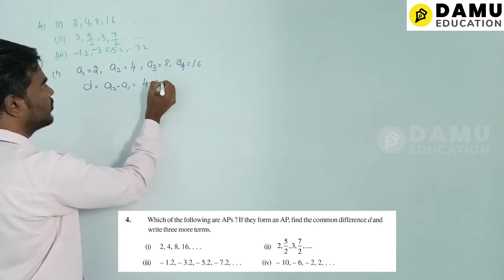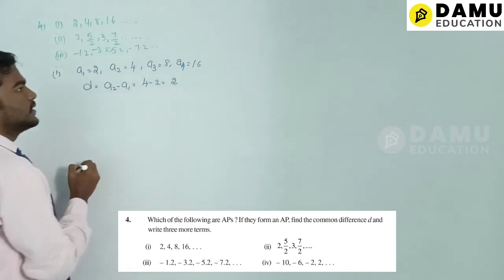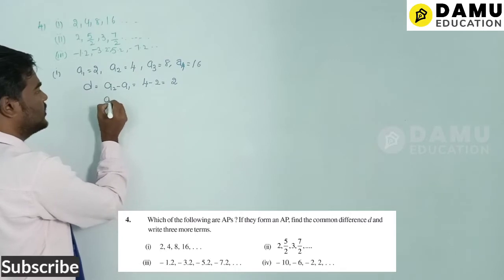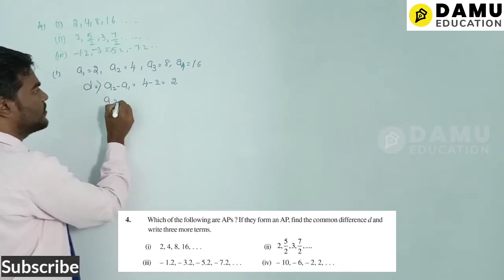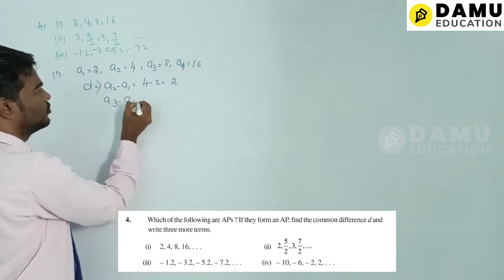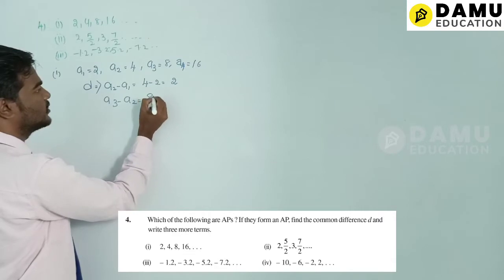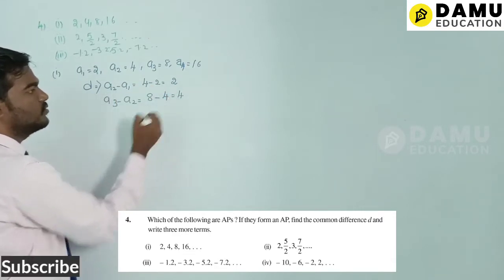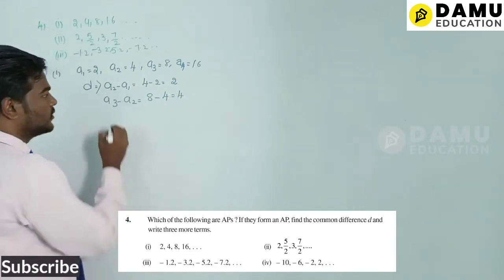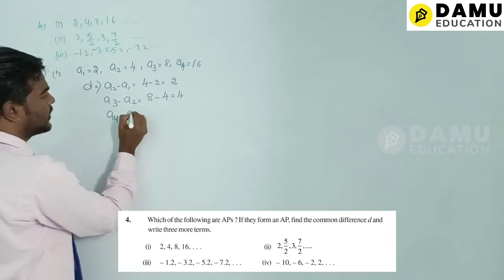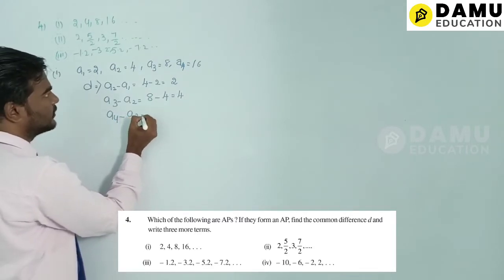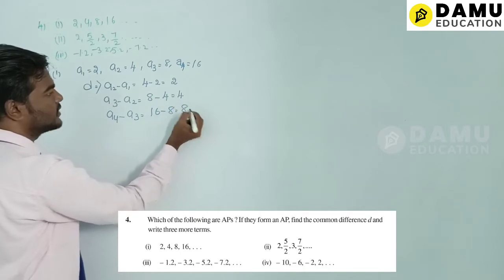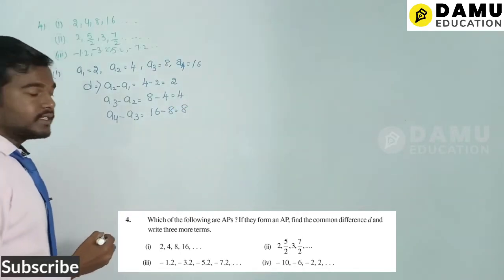Next, a3 − a2 = 8 − 4 = 4. Then a4 − a3 = 16 − 8 = 8. So the differences are 2, 4, and 8 respectively.